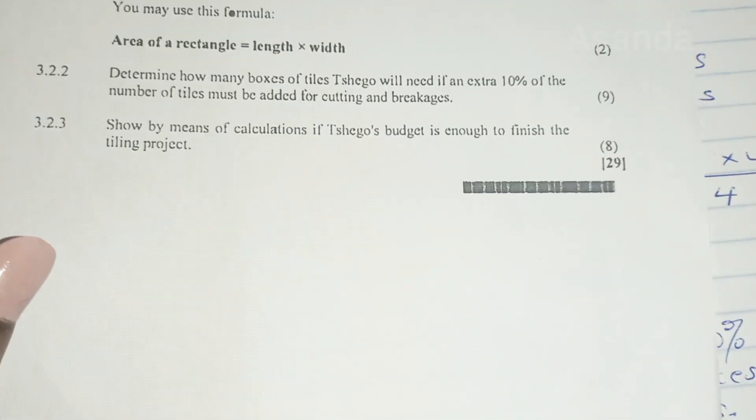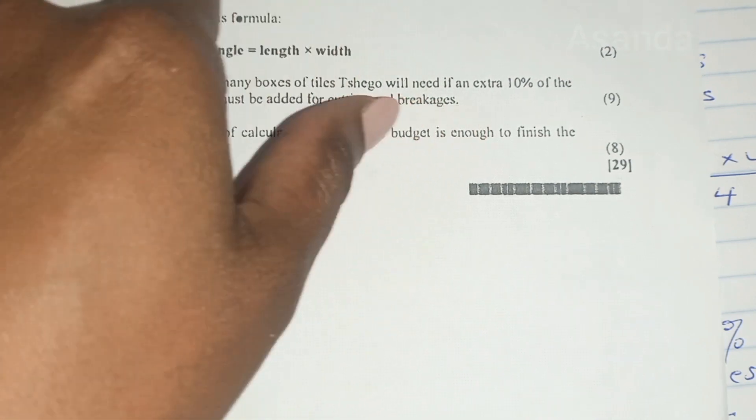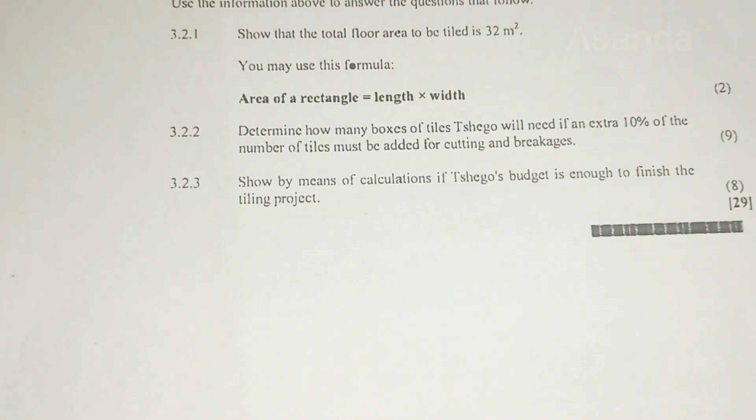So we're going to know how much the boxes are going to cost. And we're also going to know how many bags because we have 32 square meters. Okay, let's start step by step. Let's start with him buying the tiles. How much is it going to cost for him to buy the tiles alone?